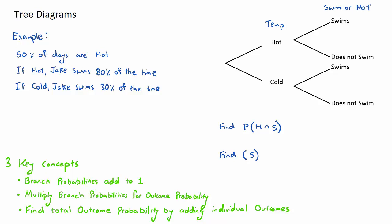First step is to put our probabilities onto the tree diagram. Let's have a look at this first piece of information: 60% of the days are hot. On our tree diagram we usually write our probabilities as decimals, not percentages, so 60% as a decimal is 0.6. This is the hot branch, the branch that goes up to the hot event, so that probability goes on top.